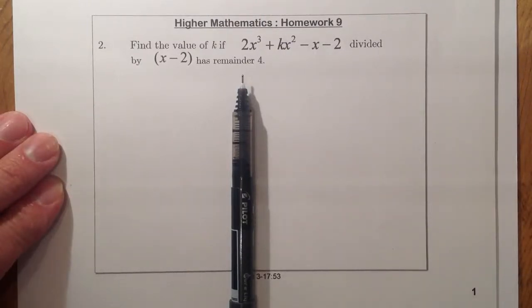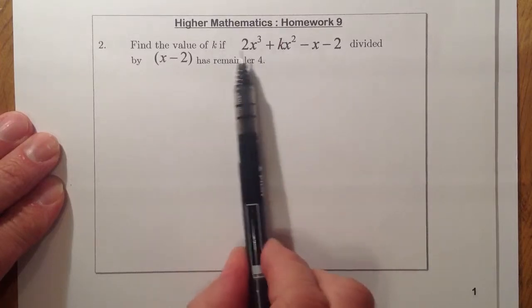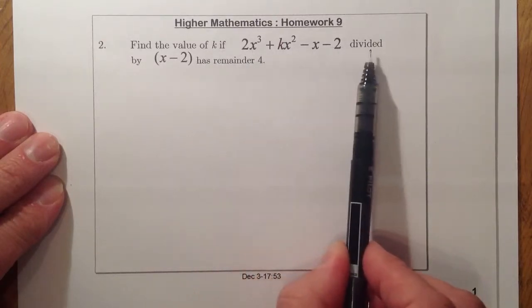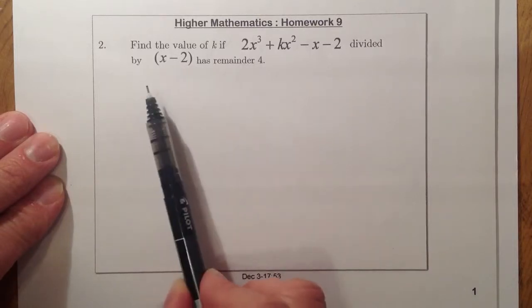Hi, our homework nine, question two. So find the value of k if this polynomial here, 2x³ + kx² - x - 2, is divided by (x - 2), that's a factor, and that has a remainder of four.